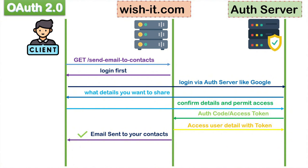After that, you will be redirected to a permission page where you will decide if you want to give wishit.com access to your Google account details. There will be an option to share the email contact list, which wishit.com will use to send the festival wishes. Once you approve this, wishit.com will be able to access your Google details which you have permitted. Under the hood, wishit.com will receive a temporary authorization code, which it will use to get an access token from your email provider. This way, the third-party application wishit.com accessed the Gmail contact list without handling any authentication or sharing the user credentials.